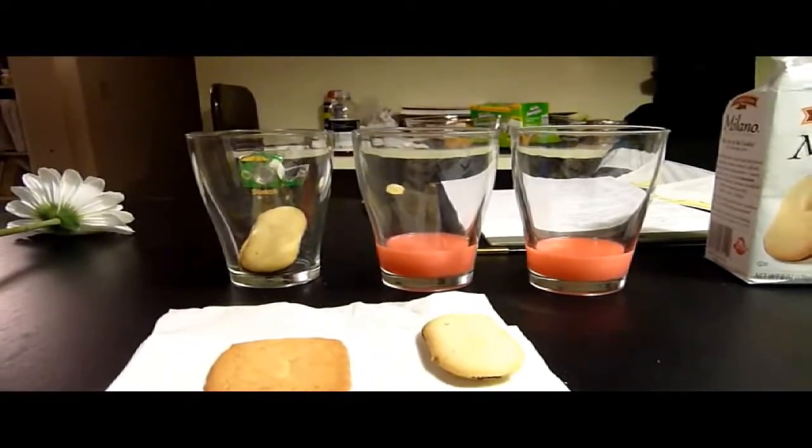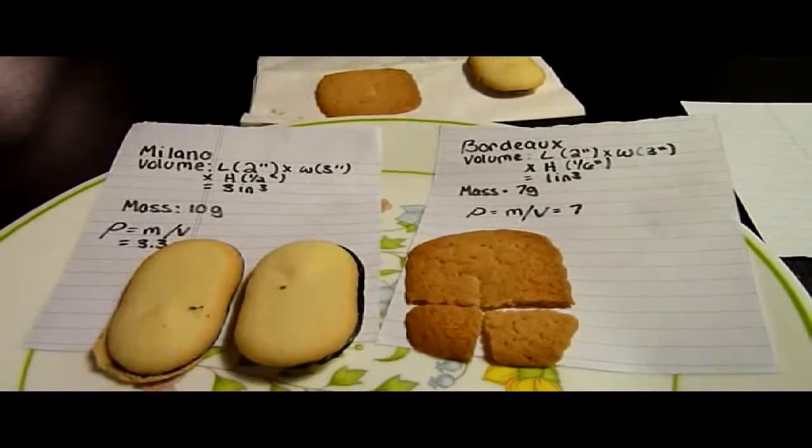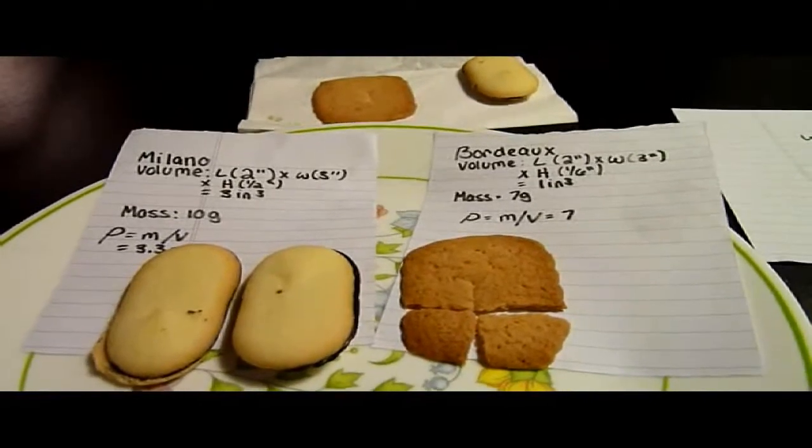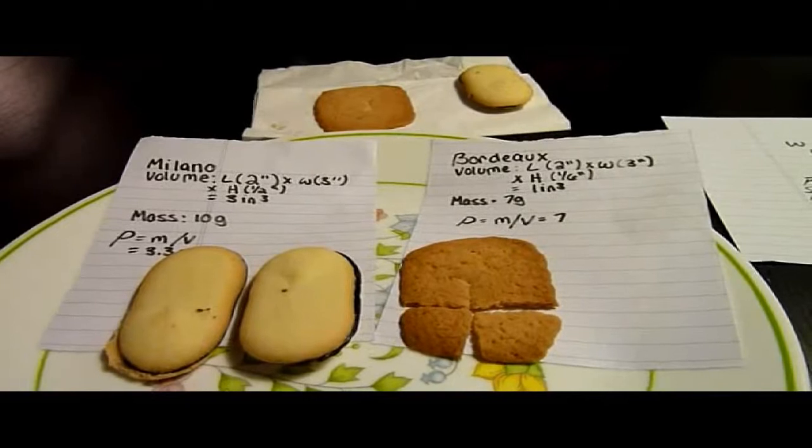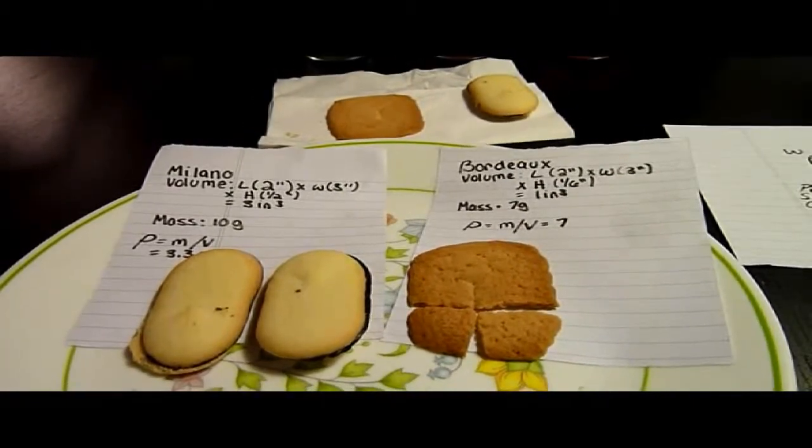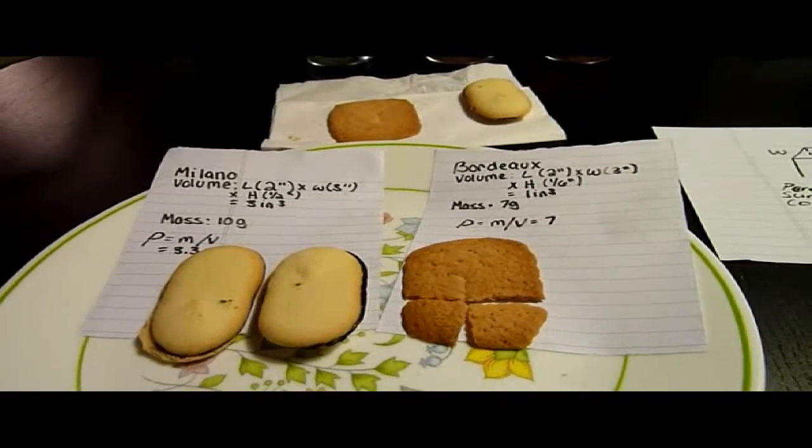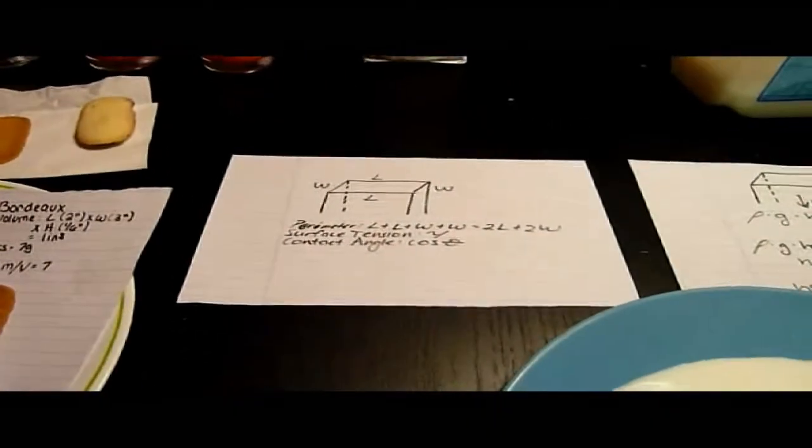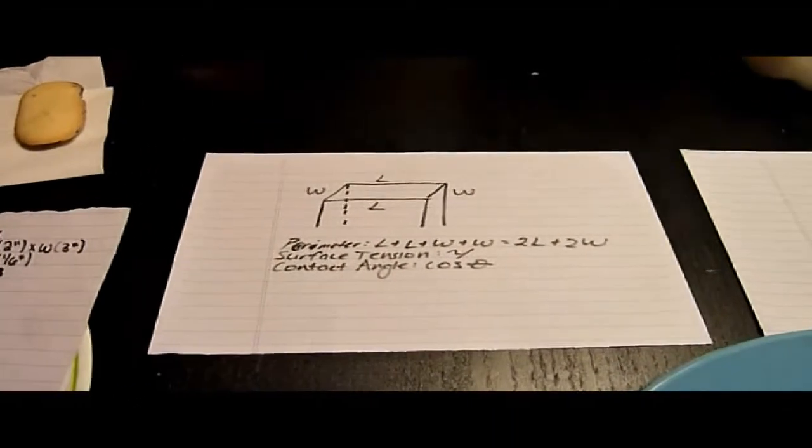The two cookies used are Milano, which has a volume calculated to 3 inches cubed and a mass of 10 grams, where our Baudot cookie has a volume of 1 inch cubed and a mass of 7 grams. The density calculated through mass divided by volume shows that the Baudot cookie has a larger density than Milano. The importance of being able to calculate density for the two cookies has a critical role in observing the effects of capillary action.